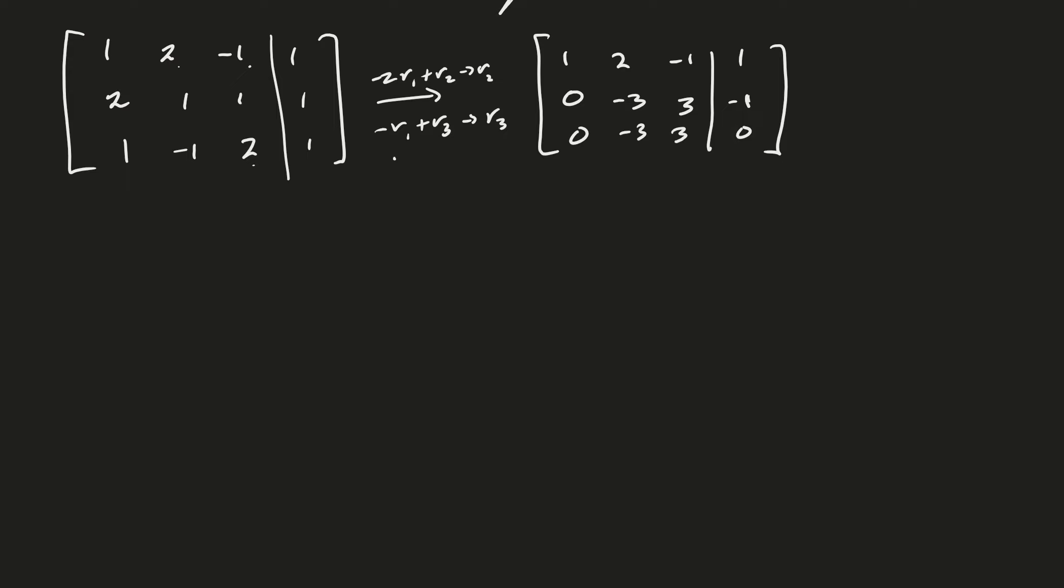Good, and now you see that we're going to have a problem, right? Because these two rows are the same in the matrix, but they're not the same in the right-hand side.